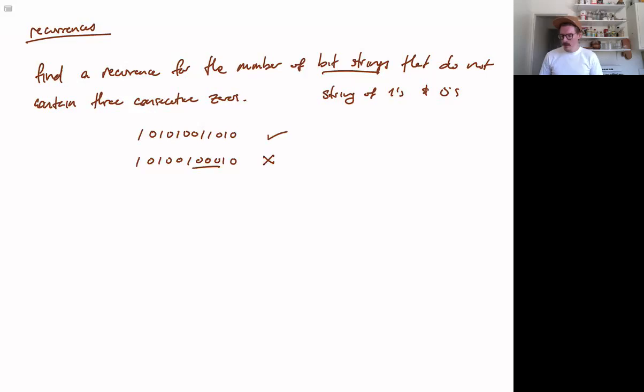So with this in mind, we want to find a recurrence for the number of bit strings satisfying this property. And that means that we should think about how we can build up new bit strings with this property from old ones. Because a recurrence, basically, is a formula for the nth term in terms of previous terms in the sequence.